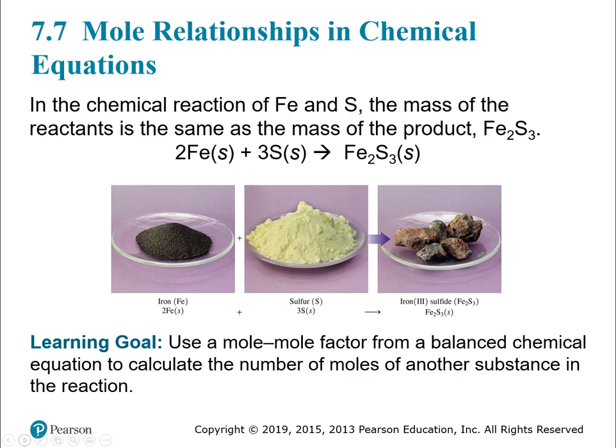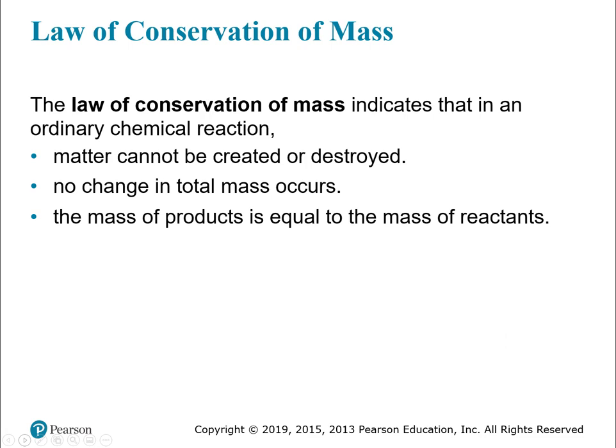Mole relationships in chemical equations. When you have a balanced chemical equation, you can read the number of moles straight from the coefficients. We can also equate those moles to mass. The law of conservation of mass tells us that in an ordinary chemical reaction, you can't destroy or create matter — no change in total mass occurs — so the mass of the products equals the mass of the reactants. Because of that, we can do calculations with moles and grams.